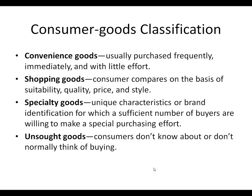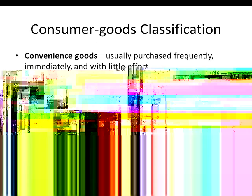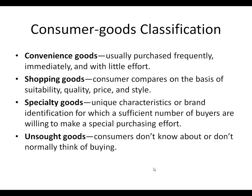Unsought goods are goods that consumers don't know about or don't normally think of buying. Impulse products — a pack of gum at the checkout aisle — are an example. Or maybe you're walking through a mall and you smell cookies coming from a store; you weren't thinking about buying cookies until you smelled them. There's no stigma related to unsought goods — it's just something that catches your eye in the store and you say, 'I didn't think I needed that, but I'm going to get that.'